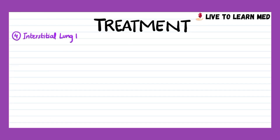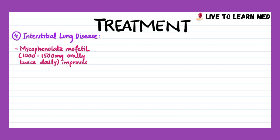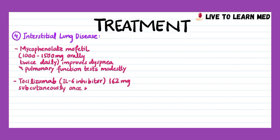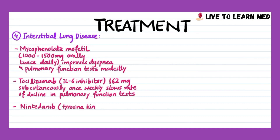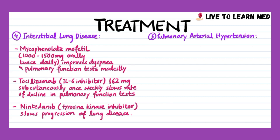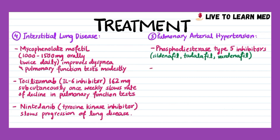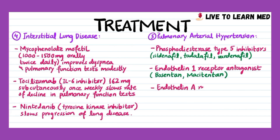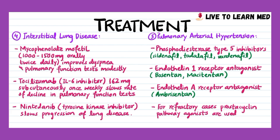For interstitial lung disease, mycophenolate mofetil 1000–1500 mg orally twice daily can improve dyspnea and pulmonary function tests modestly. The interleukin-6 inhibitor tocilizumab 162 mg subcutaneously once weekly slows the rate of decline in pulmonary function tests and is used as an alternative in patients not tolerating mycophenolate mofetil. Nintedanib, an inhibitor of multiple tyrosine kinases, slows progression of systemic sclerosis-associated lung disease. Therapies for pulmonary arterial hypertension include phosphodiesterase type 5 inhibitors — sildenafil, tadalafil, and vardenafil — endothelin-1 receptor antagonists such as bosentan and macitentan, endothelin A-receptor antagonists such as ambrisentan for refractory pulmonary hypertension, and prostacyclin pathway agonists such as iloprost, treprostinil, and epoprostenol.